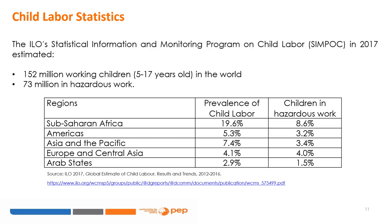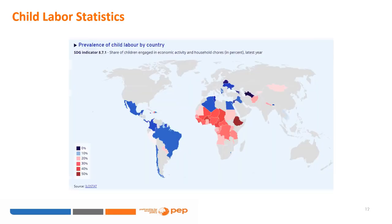Sub-Saharan Africa is followed by Asia and the Pacific. This ILO map shows the share of children engaged in economic activity and household chores in different countries. In Sub-Saharan Africa, there are countries with more than 30% of their children involved in these activities, while in Central and South America the percentages are generally lower than 10%. These estimates refer to children aged 5 to 17: those aged 5 to 11 who did at least 1 hour of economic activity or at least 21 hours of household chores per week, and children aged 12 to 14 who did at least 14 hours of economic activity or at least 21 hours of household chores.